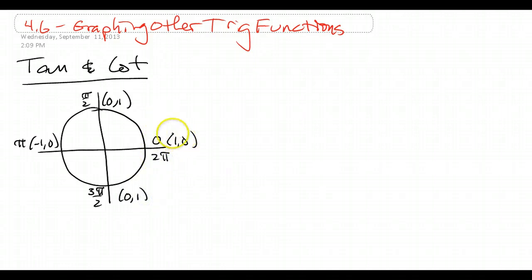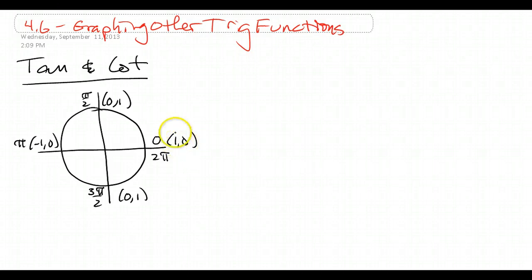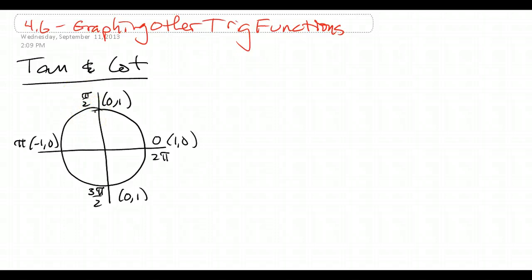If we're looking at the tangent and cotangent at each of these spots, we need to realize that any time we divide by 0, that function is going to be undefined. Tangent is y over x. So when I take 0 divided by 1 over here at 0, I'm going to get 0. But over here at pi over 2, when I do 1 divided by 0, I'm going to get that the tangent is undefined.